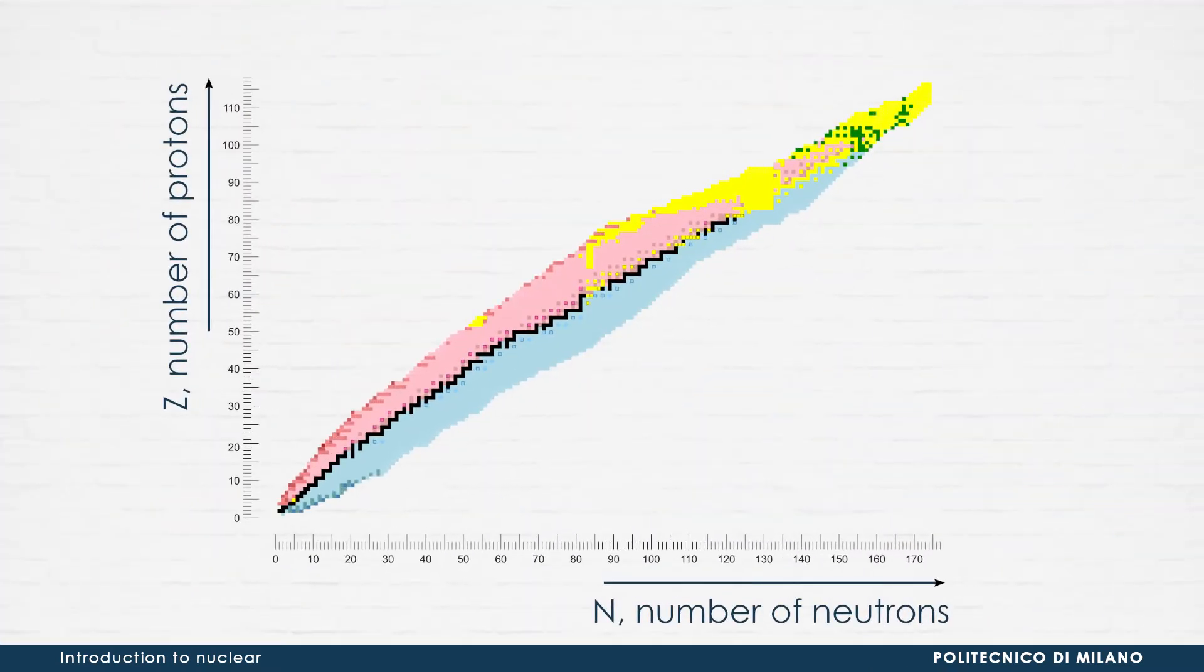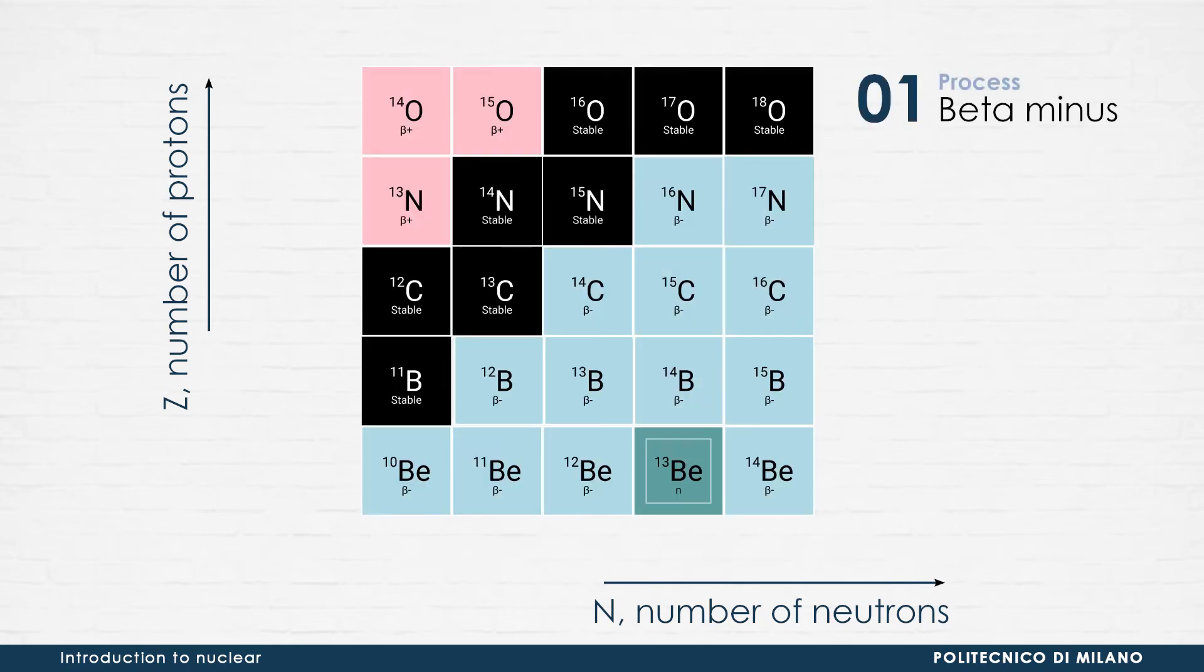Let's go back to the table of nuclides. The second decay mode we are going to analyze refers to the light blue regions, the so-called beta minus decay, which involves the conversion of a neutron into a proton. The mass number A of the nucleus remains unchanged, while its atomic number Z increases by one.